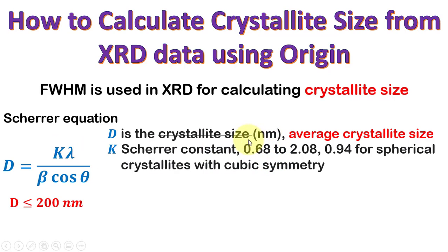The value of Scherrer constant changes the crystallite size from approximately 70% to 200%. The value must be exactly known, otherwise the crystallite size will not be authentic.